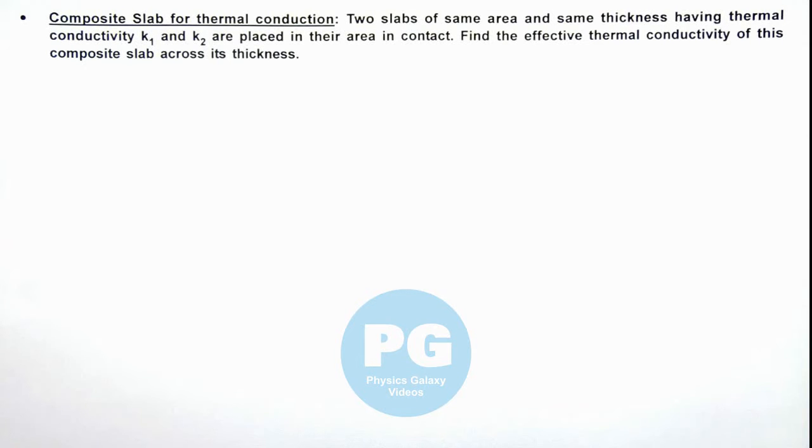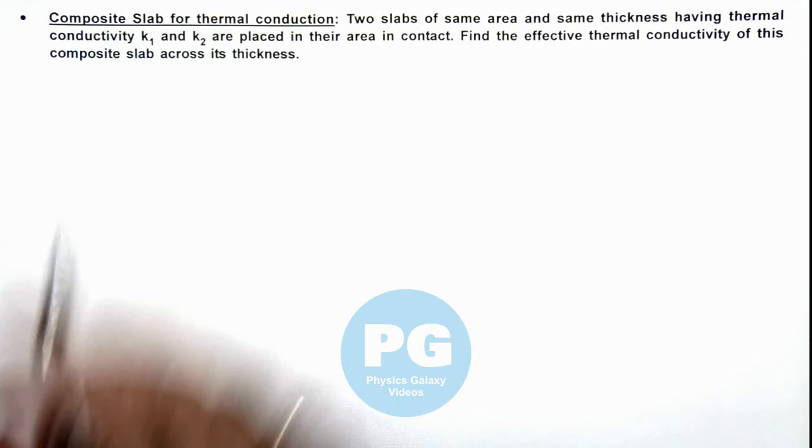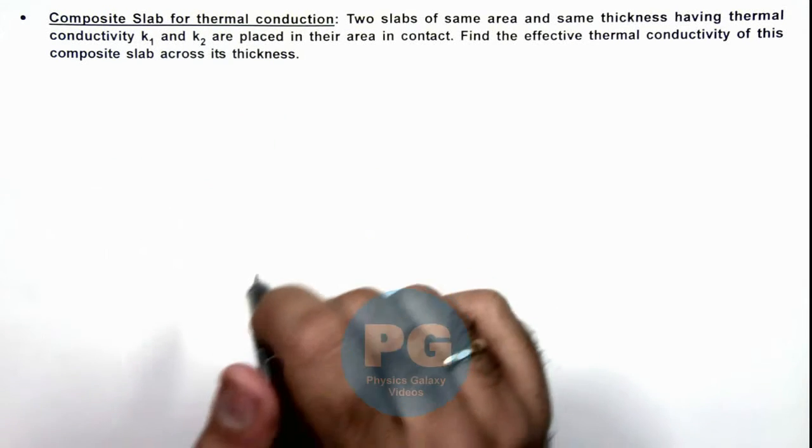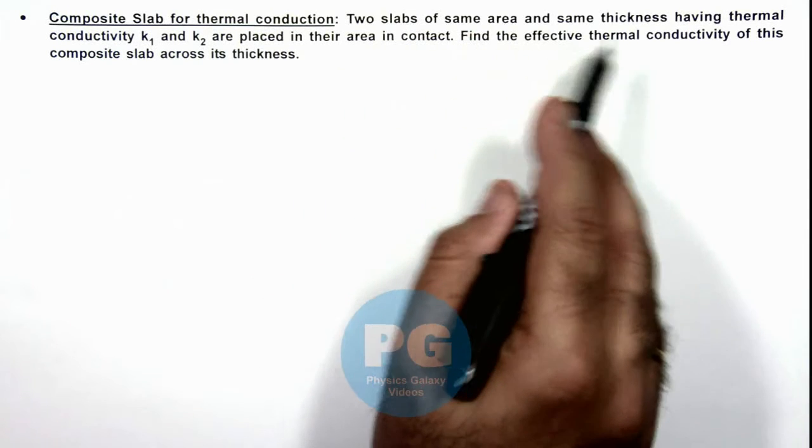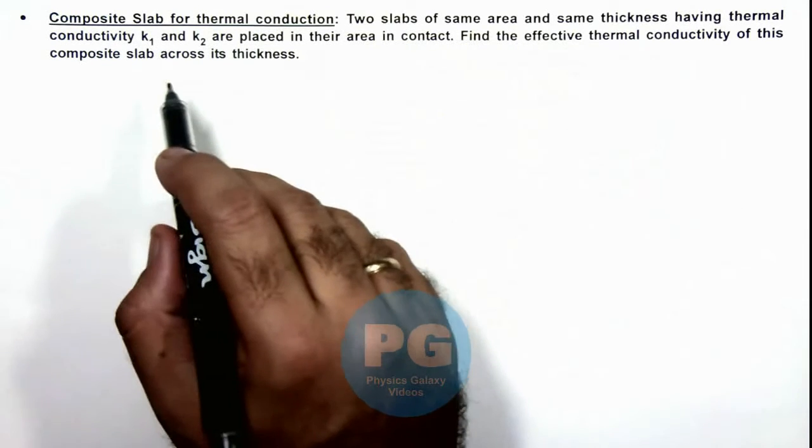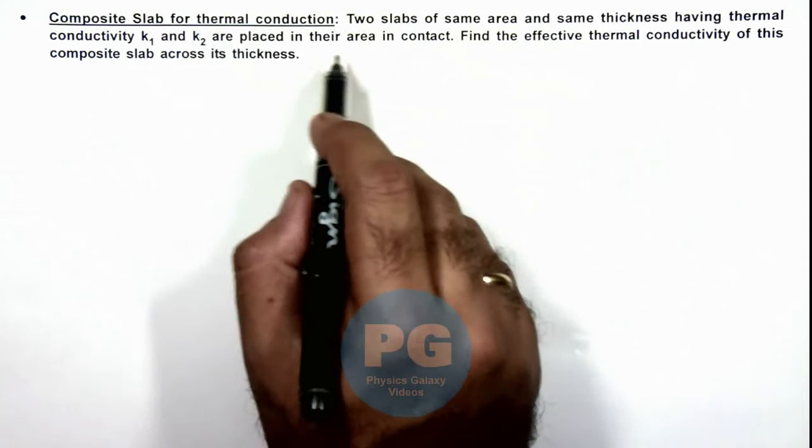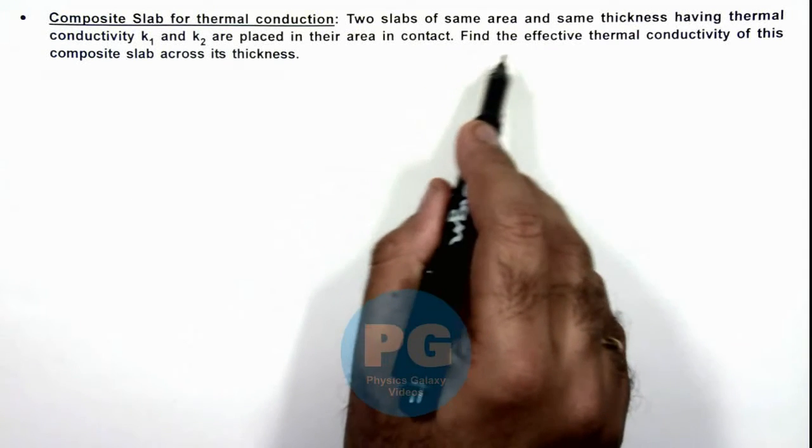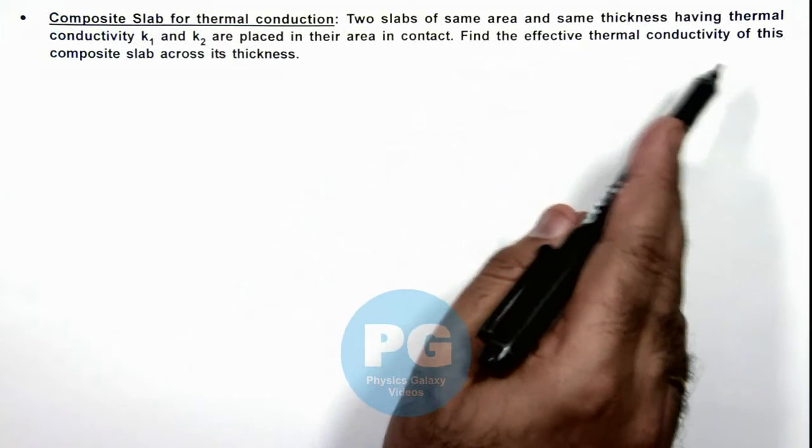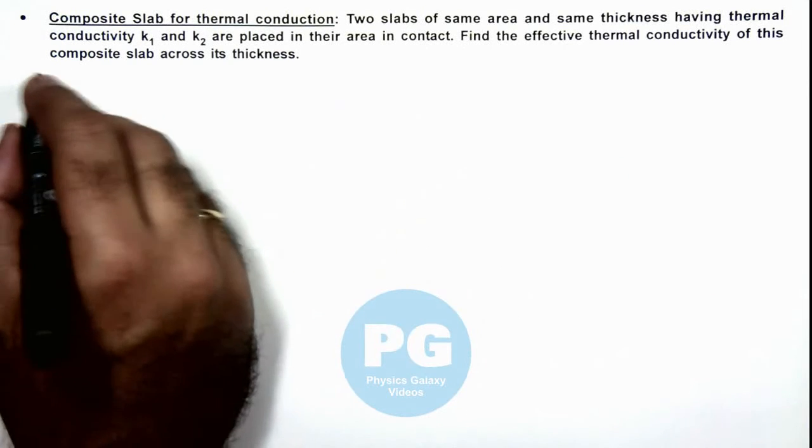In this illustration we'll be analyzing a composite slab for thermal conduction. We are given that two slabs of same area and same thickness having thermal conductivities k1 and k2 are placed in their area in contact. We are required to find the effective thermal conductivity of this composite slab across its thickness.